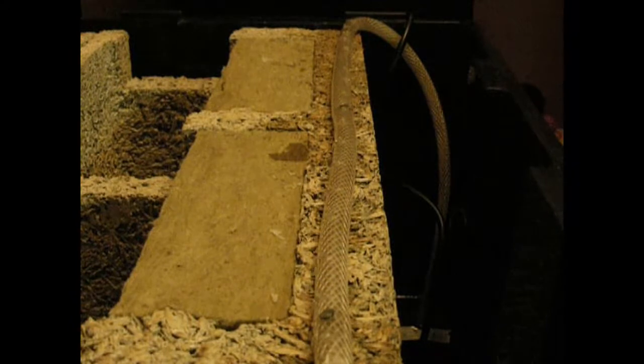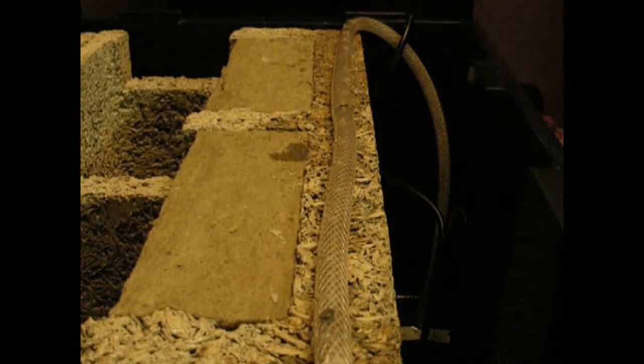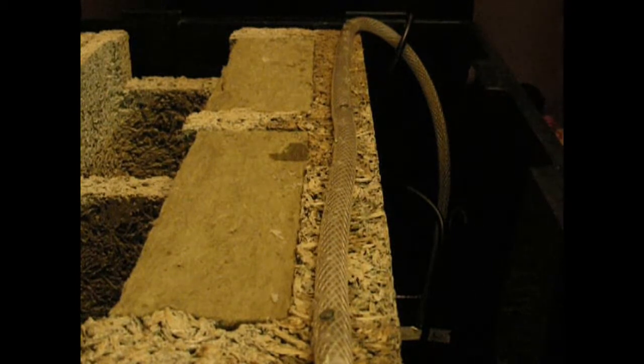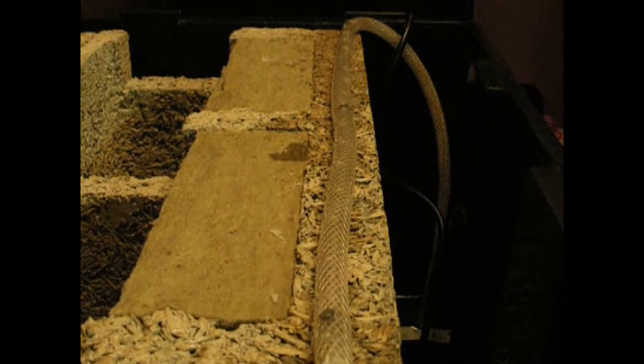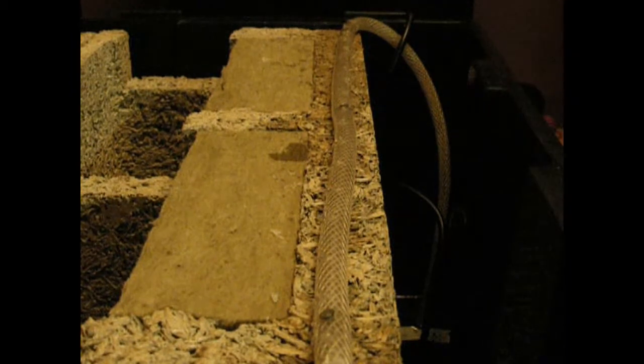The process to mineralize the chips is a subtractive process. It is only taking away properties of the wood. There's no items added to the wood. It's a very closely guarded secret from Duracell, but they're somehow removing the starches and the sugars from the wood and leaving just the carbons.